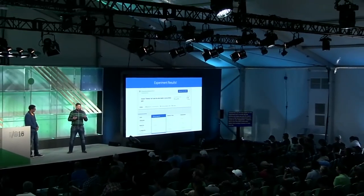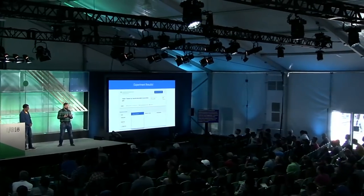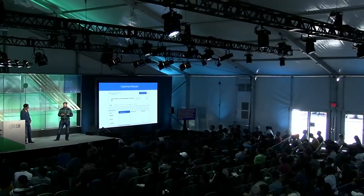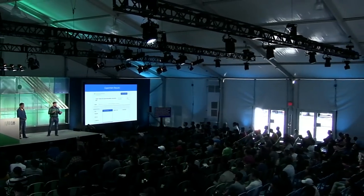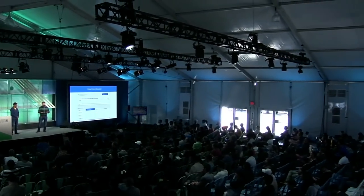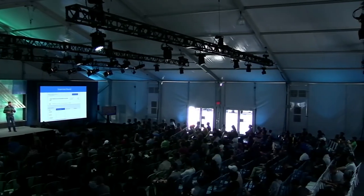Once I'm satisfied that variant C — themed text — is actually the winner, it's very easy to roll that out to the remaining population of my app by clicking the big blue button at the top of the screen that says 'Roll out the leader.' Then that message will go out to the remaining people in my app who haven't seen the message.